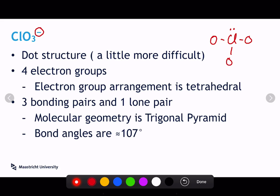And so we see that we've got four electron groups. We've got a lone pair, and we've got three bonding pairs around that chlorine.